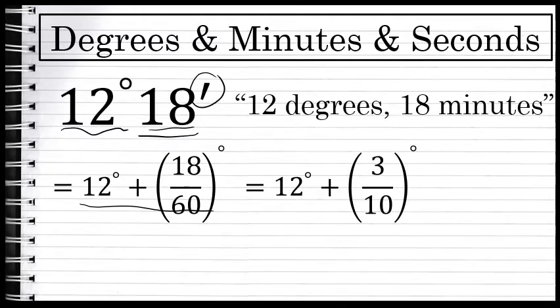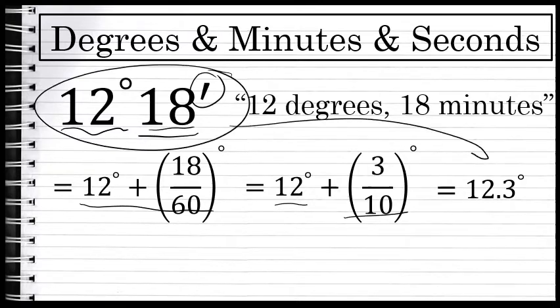And 3/10 as a decimal would be 0.3. So 12 degrees plus 3/10, or 0.3 degrees, is simply 12.3 degrees. 12 degrees 18 minutes is exactly the same as 12.3 degrees - it's just two different ways to represent the same number of degrees.